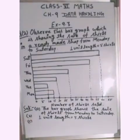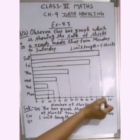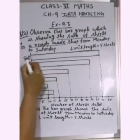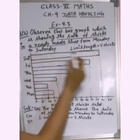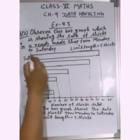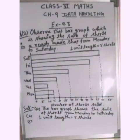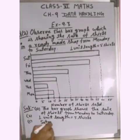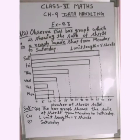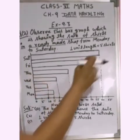Part C asks: On which day were the maximum number of shirts sold? The highest bar belongs to Saturday, with 60 shirts sold. So the maximum is on Saturday, with 60 shirts.